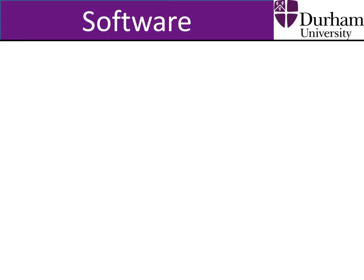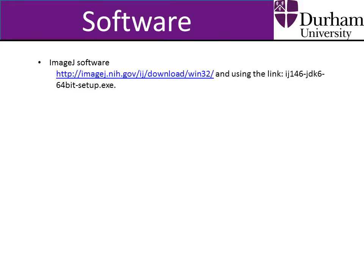You will need to download the ImageJ software onto your computer. Note that version 1.46 including Java is required for use here, due to incompatibility issues with more recent versions and the drop analysis plugin required to measure the static contact angle. This version of the software can be downloaded using the link IJ146JDK664bitsetup.exe. You will need to check your computer specifications to check if it has a 64-bit processor. If it does not, you will need to use the alternative link. Note that the link in the following tutorial is designed for Windows computers and may vary for different operating systems.